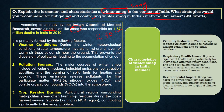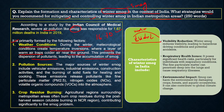Winter smog is primarily formed by the following factors. First, weather conditions: during winter, meteorological conditions create temperature inversion — a layer of warm air traps colder air near the ground. This prevents the dispersion of pollutants, leading to accumulation of smoke.